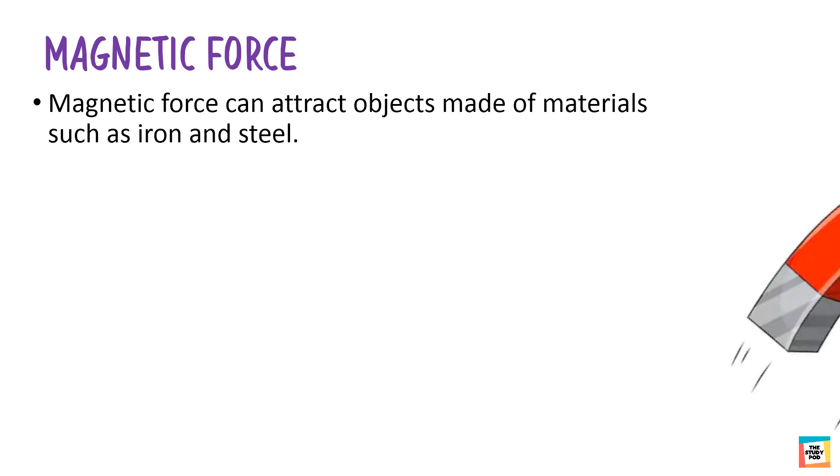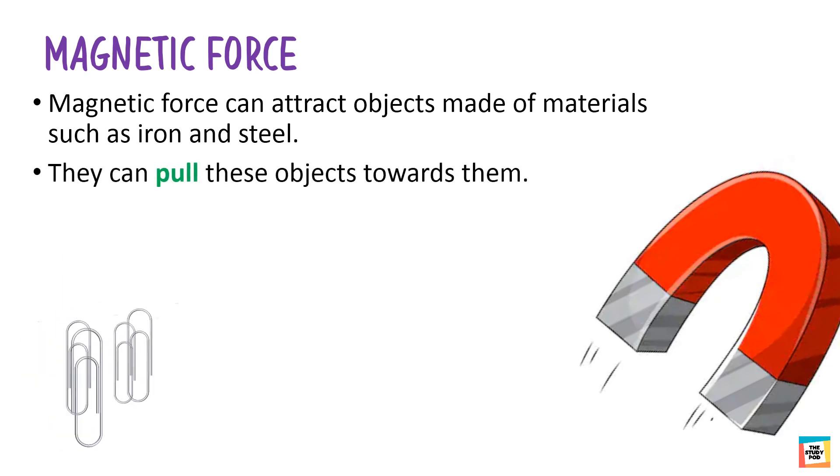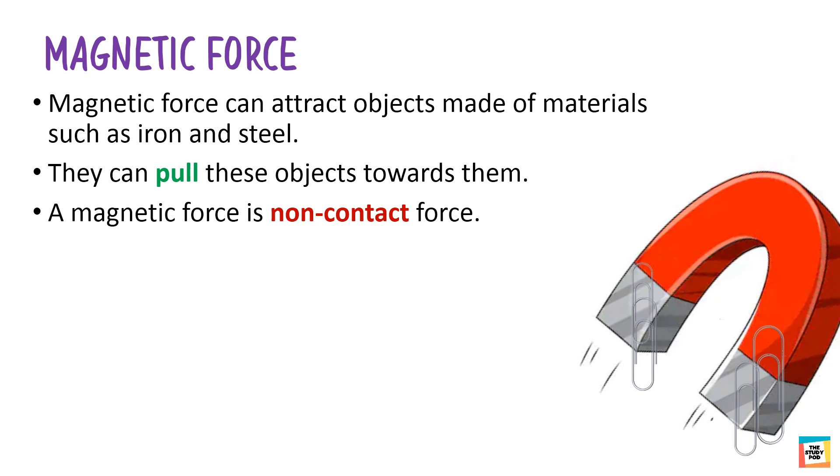A magnetic force can attract objects made of materials such as iron and steel. They can pull these objects towards them. A magnetic force is a non-contact force. This means it can act on objects without touching them.